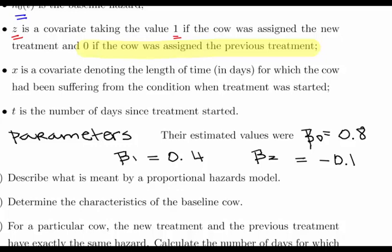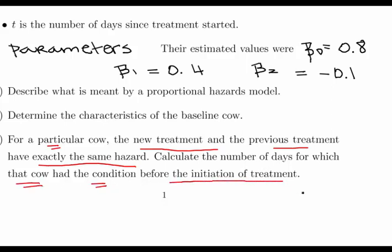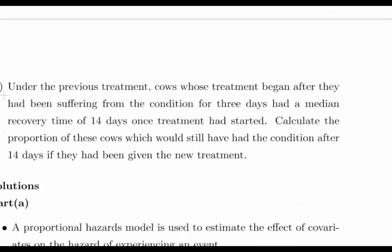I'm going to skip through the definitions and go down to parts B and C to keep this video short. Part B is to identify the characteristics of the baseline cow. Part C: for a particular cow, the new treatment and the previous treatment have exactly the same hazard — calculate the number of days for which that cow has had the condition before the initiation of treatment.